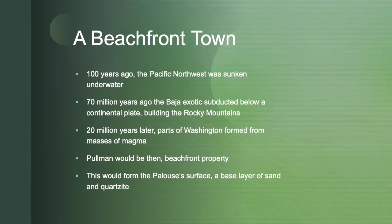A hundred million years ago the Pacific Northwest was sunken underwater. The shorelines resided in western Montana and north-central Idaho along the Farallon Plate. Seventy million years ago the Baja exotic located in an accretionary wedge where the shoreline subducted below a continental plate. Volcanic developments caused the building of the Rocky Mountains. Finally, 20 million years later, parts of Washington rose above sea level, forming Vancouver Island, as the oceanic plate sank below the continental plate causing masses of magma to heat, melt, and rise to form eastern Washington.